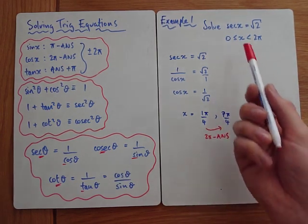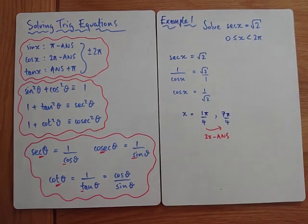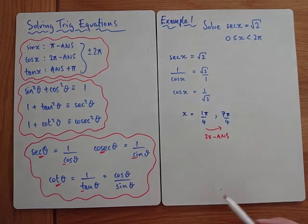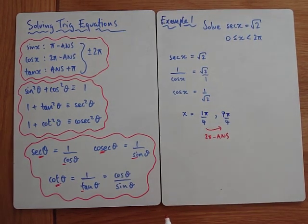Check both answers are between 0 and 2π — yes. Can we get any more? If you add 2π it would be too big. So our answers are π/4 and 7π/4.